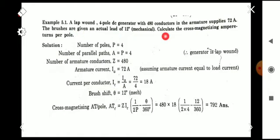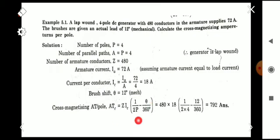The first problem: a lap wound, four-pole DC generator with 480 conductors in the armature supplies 72 amperes. The brushes are given an actual lead of 12 degrees mechanical. Calculate the cross-magnetizing ampere-turns per pole. The equation for ATC is: ATC = Z × IC × (1/2p − θ/360), where Z is the number of conductors, IC is the current per conductor, P is the number of poles, and θ is the brush lead in mechanical degrees.